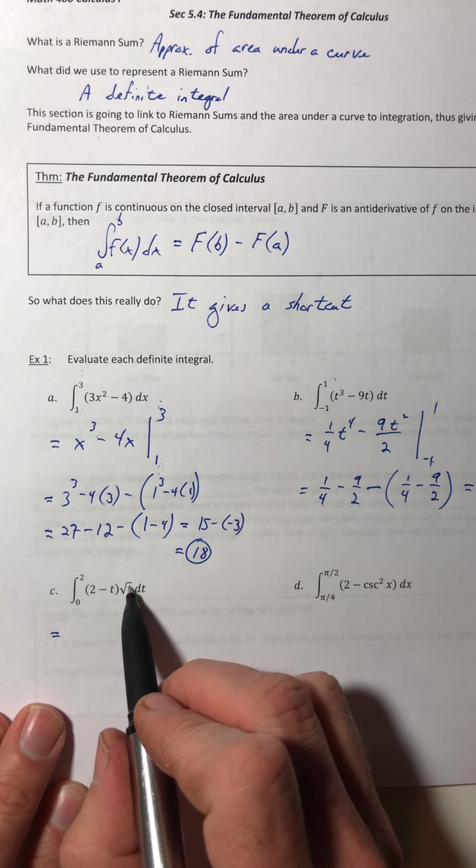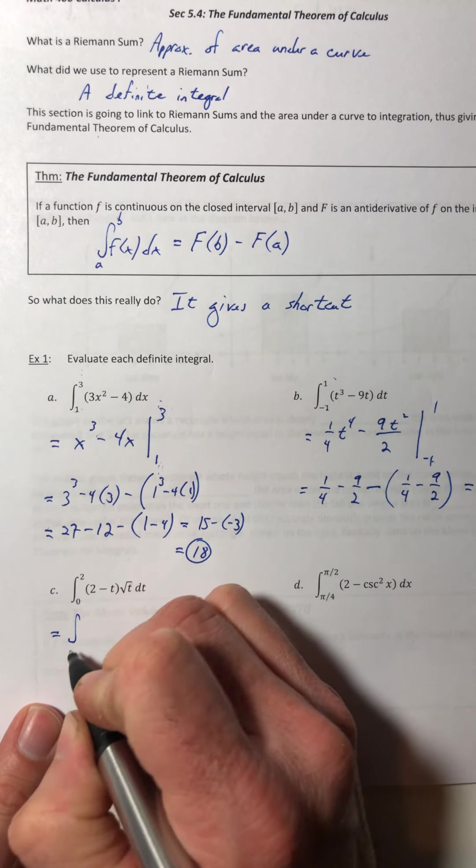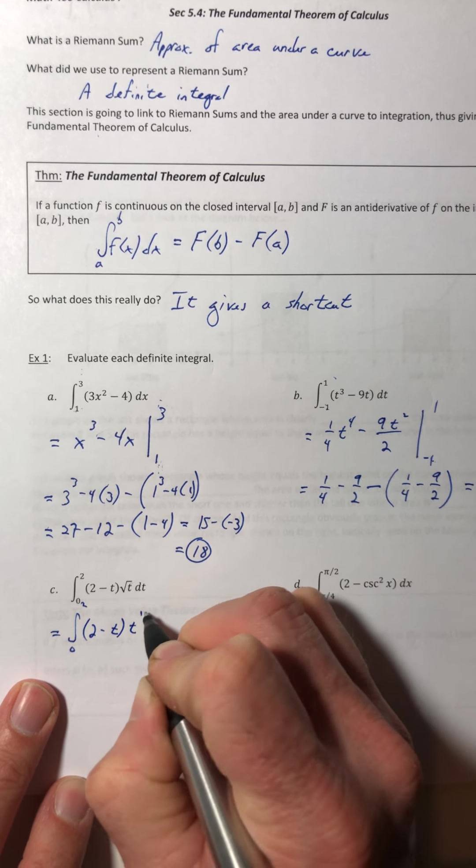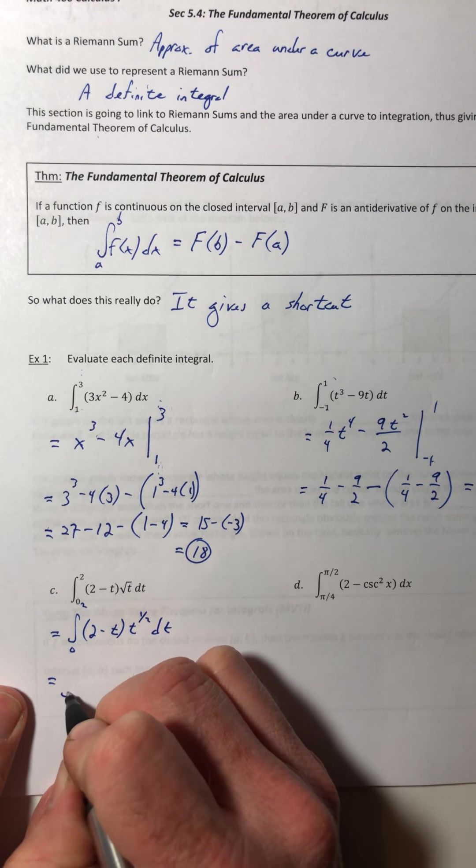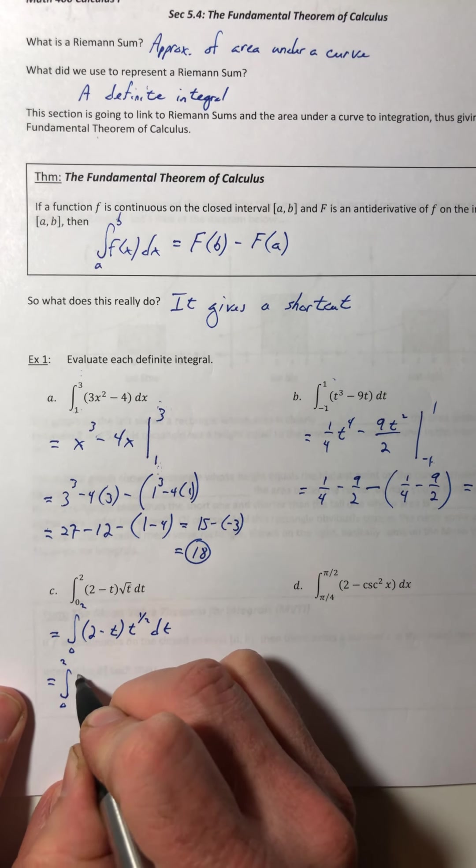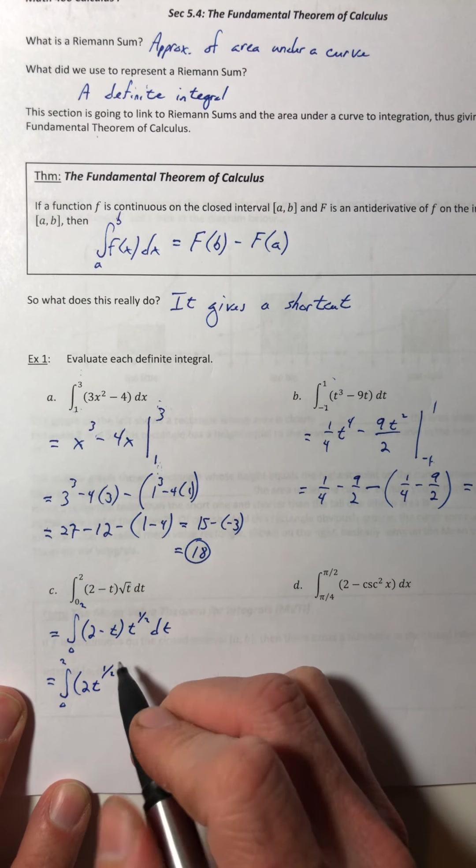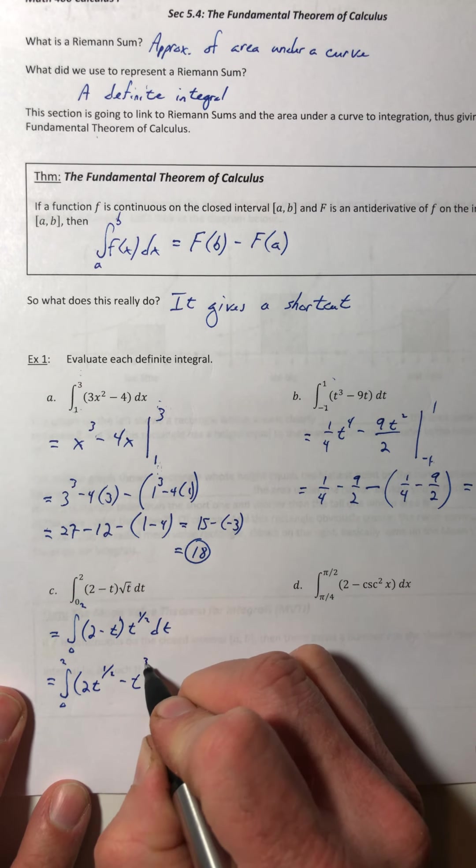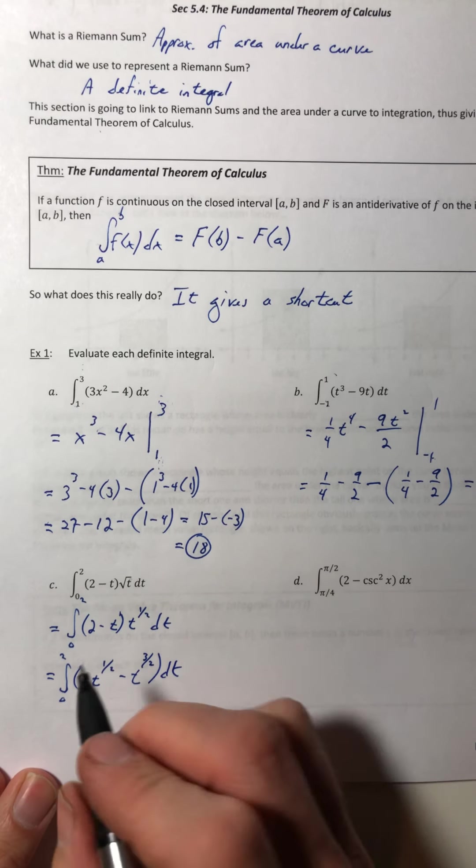Let's go ahead and do part C. So first things first, we're going to change that square root of t into a t^(1/2) power. And then we're going to distribute. And then t¹ times t^(1/2) is t^(3/2). Add up your exponents. And now I can integrate.